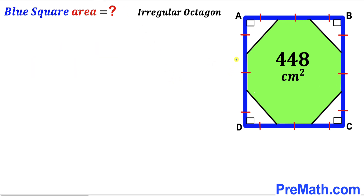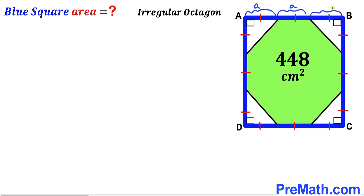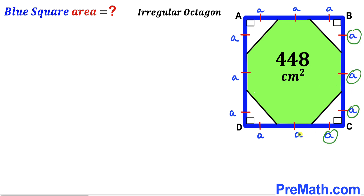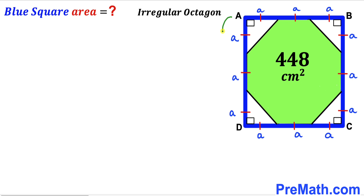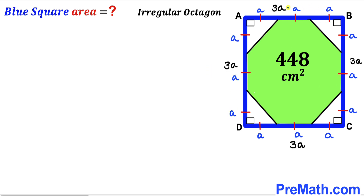Since we know that all sides of the blue square have been divided into three equal parts, I'm going to label each segment as lowercase a. All segments across the board are lowercase a. Therefore the side length of this blue square is a + a + a, which equals three times a. So all side lengths of this blue square are 3a.